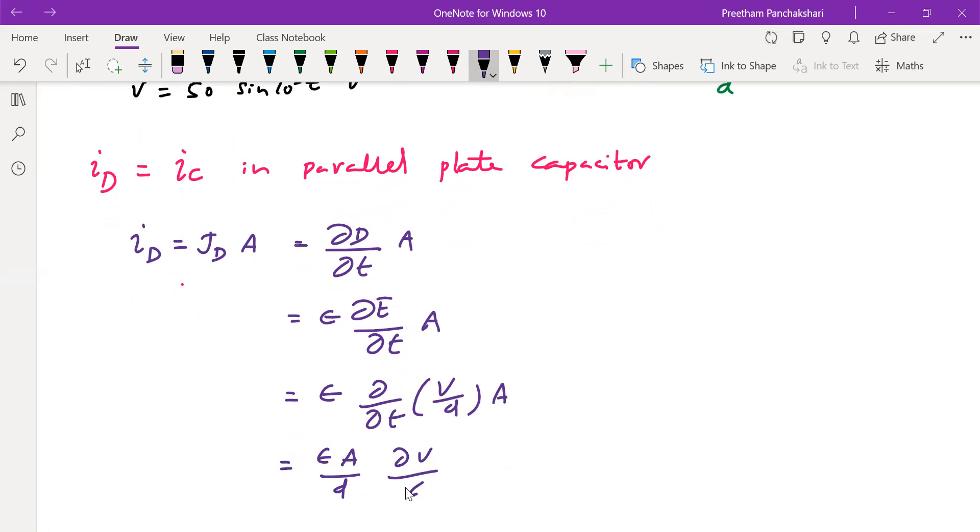So epsilon A divided by D are known already. They are given in the problem itself. So this can be calculated using the equation containing these parameters.